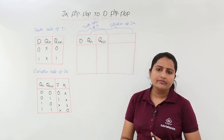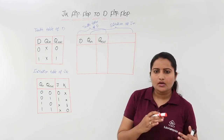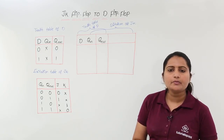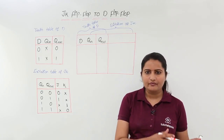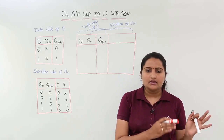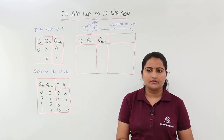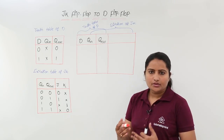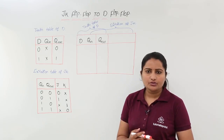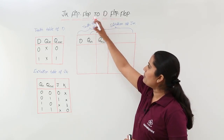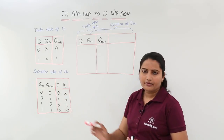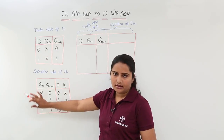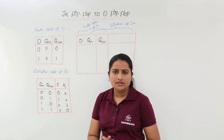The destination flip-flop is the flip-flop to which we want to convert, and the source flip-flop is the flip-flop from which we are converting. To perform this conversion we require the truth table of the D flip-flop and the excitation table of the JK flip-flop. I have taken both these tables as reference.